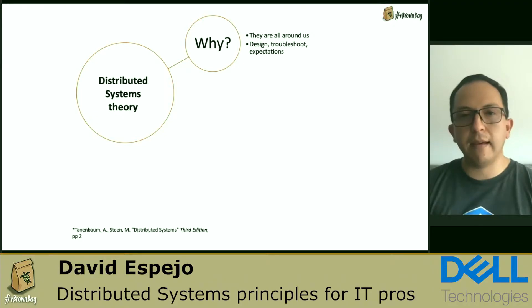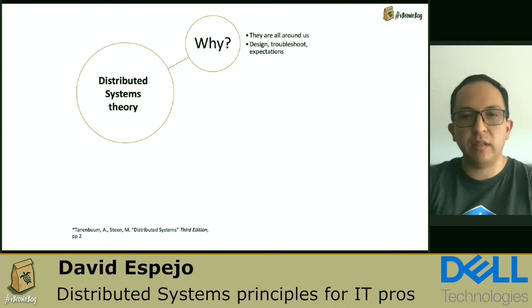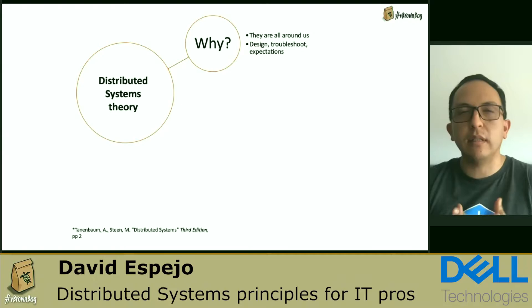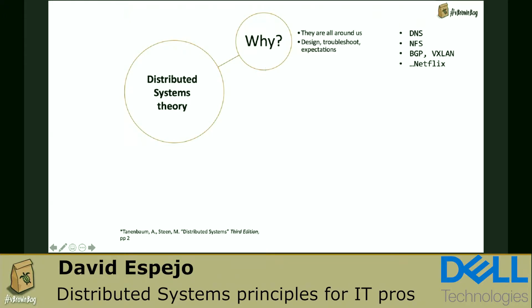In my experience, this academic topic is not open for the interpretation of a specific vendor. It's a concise, exact, precise topic. When it's clear for us — and that is the main goal of this session — we can trace these topics to most of the systems, protocols, and products we use in day-to-day IT operations. Examples of distributed systems include DNS, network file systems, network protocols like BGP or VXLAN, and even Netflix — a planetary-scale distributed system that happens to provide streaming services to end users.